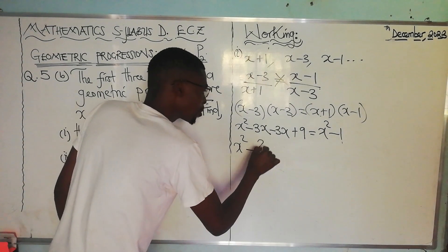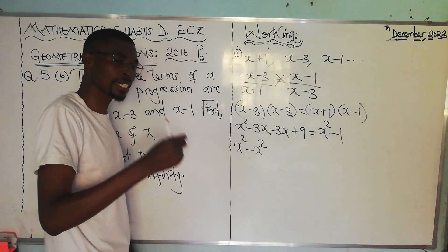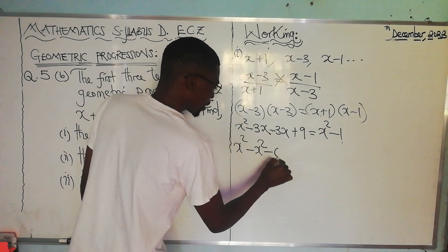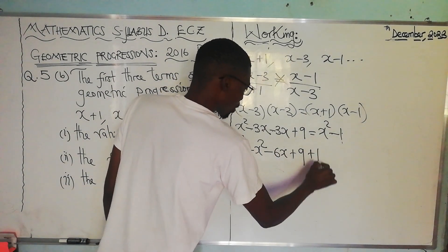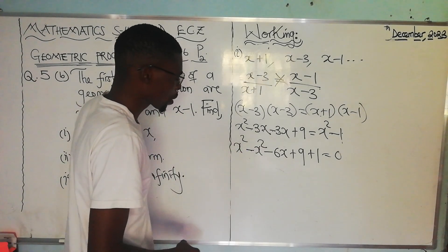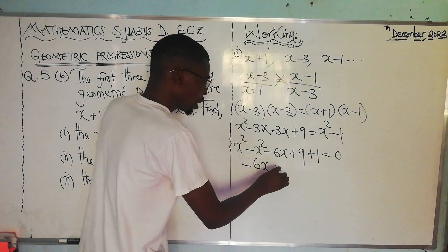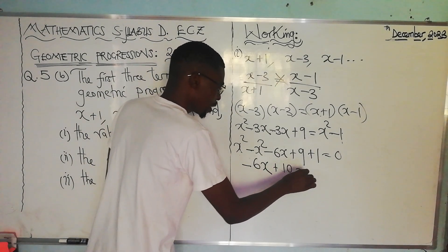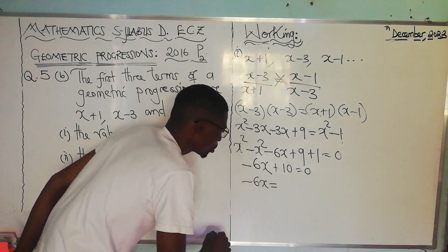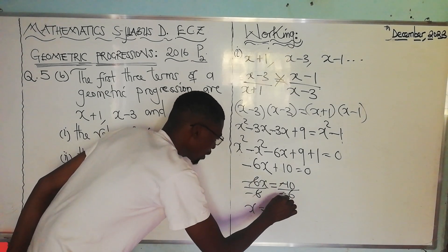Grouping like terms: x squared minus x squared cancels to zero. Then negative 3x minus 3x gives negative 6x, plus 9 on the left; and positive 1 on the right, giving zero. So we have negative 6x plus 9 plus 1 equals zero, which simplifies to negative 6x plus 10 equals zero. Dividing both sides by negative 6, x equals 10 over 6.